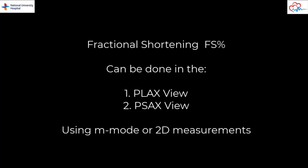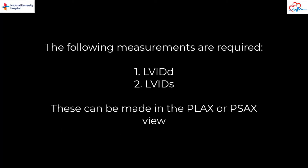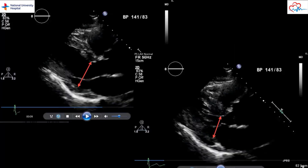The measurements required to determine fractional shortening can be obtained in the parasternal long axis or parasternal short axis view. Either M-mode or 2D measurements can be used. In order to determine fractional shortening, we need to first measure the internal diameter of the LV in both diastole and systole. These are the LV ID diastole and LV ID systole measurements. Both measurements are seen here being made in diastole and systole in 2D mode. The measurements are being made in the parasternal long axis view. The red arrows show where the measurements of the LV diameter should be made.